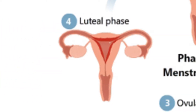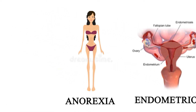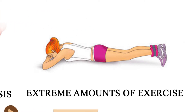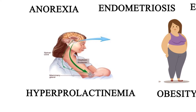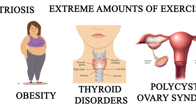This can make it difficult to become or remain pregnant. A luteal phase defect can happen if your ovaries don't release enough progesterone, or if the lining of your uterus doesn't respond to the hormone. The condition has been linked to many health problems including anorexia, endometriosis, extreme amounts of exercise, and hyperprolactinemia — too much of a hormone responsible for making breast milk.